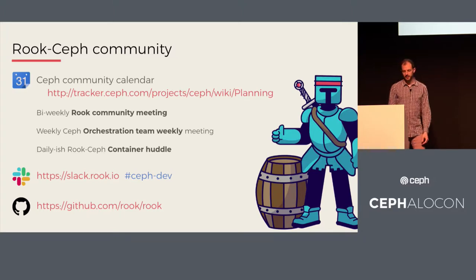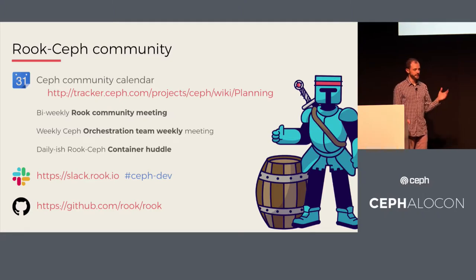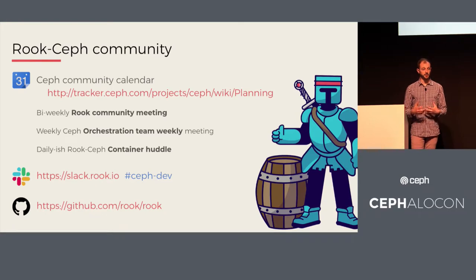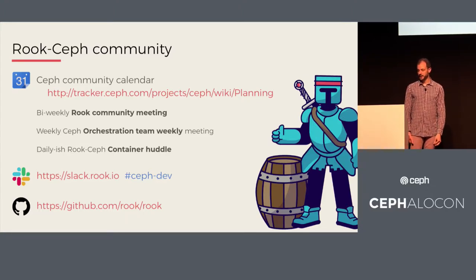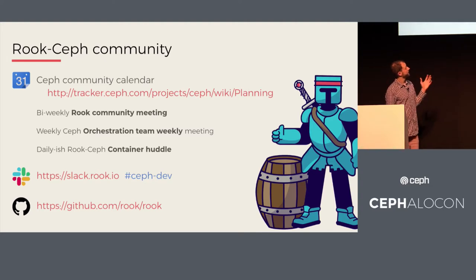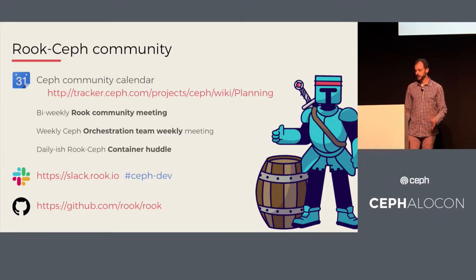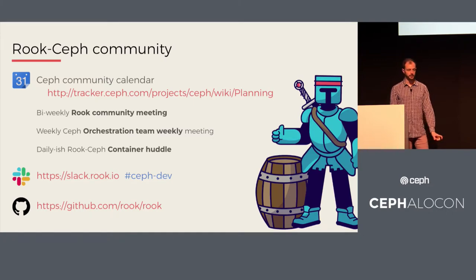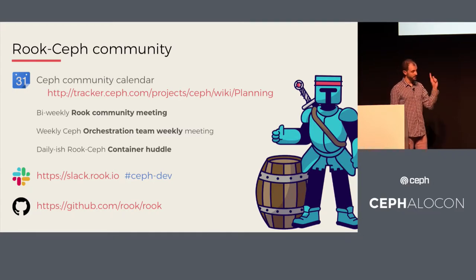For community involvement, the Ceph community calendar has pretty much everything for upstream coordination. Key items are the community meeting, the orchestrator weekly meeting, and a daily-ish huddle meeting. The Rook Slack, the Ceph dev channel, and GitHub are also great places to start.